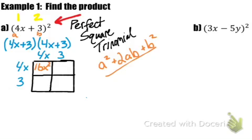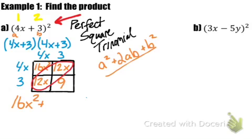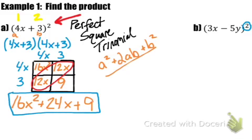We fill in the box: 4x times 4x gives 16x squared; 4x times 3 gives 12x; same thing on the bottom left, 12x; and then 3 times 3 gives 9. So we have 16x squared all by itself, and then since we have like terms 12x and 12x, those combine to give 24x, plus 9. Our product is displaying the pattern a squared plus 2ab plus b squared.